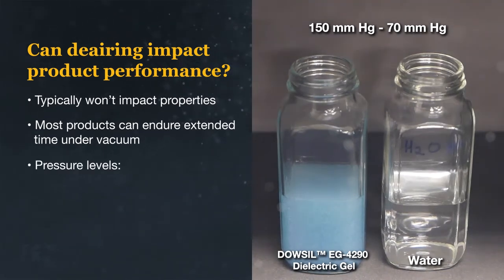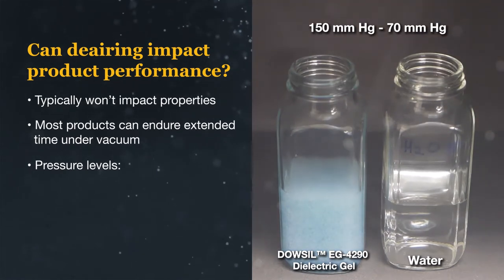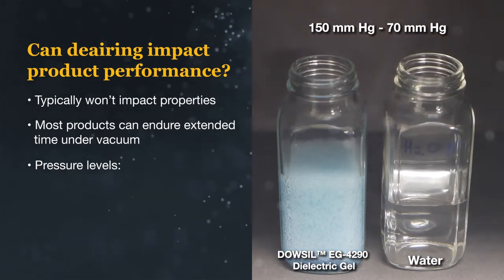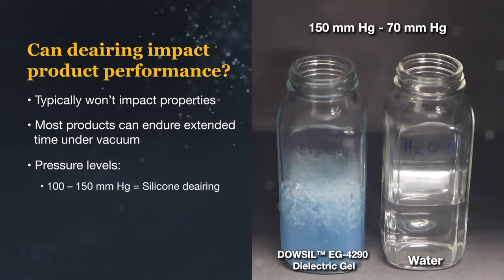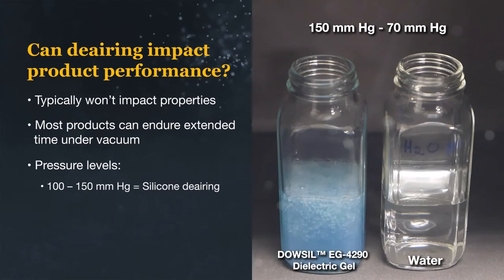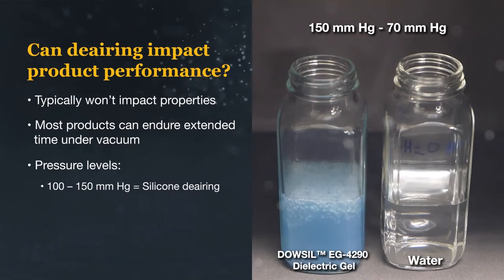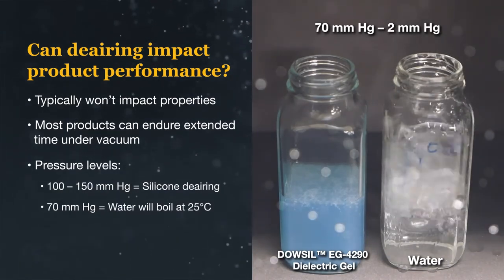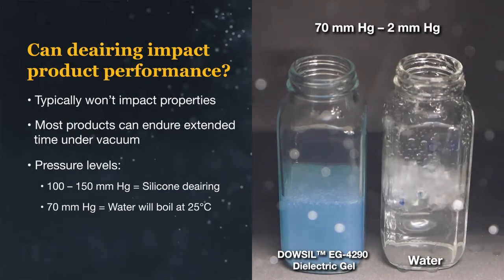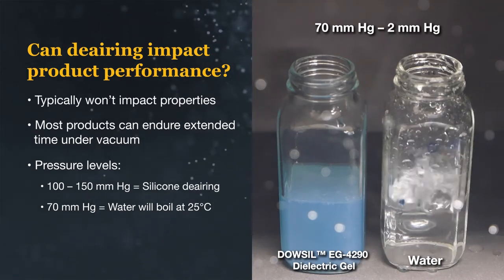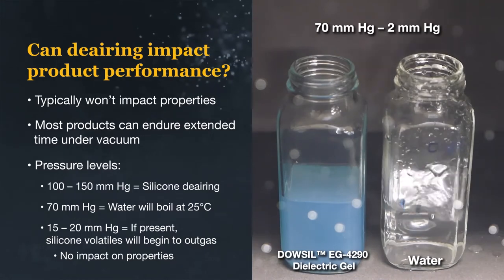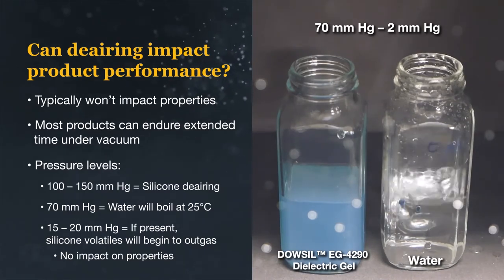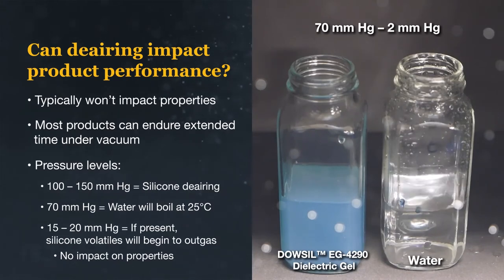In this example, on the left is a dielectric gel silicone and on the right is water. At the beginning of the video, you can see that at 150 millimeters of mercury, the silicone begins to de-air and continues as the pressure drops to 70 millimeters of mercury. As the pressure drops below 70 millimeters of mercury, the silicone has completely de-aired, but the water begins to boil. As the pressure continues to drop to 2 millimeters of mercury, the water continues to boil, and the silicone shows few to no bubbles forming.